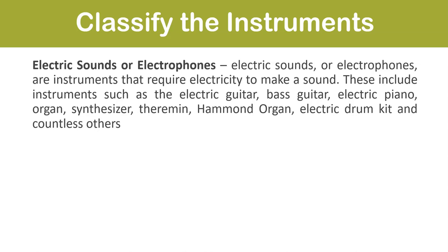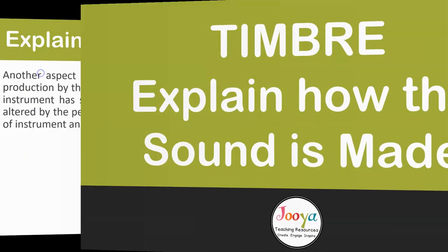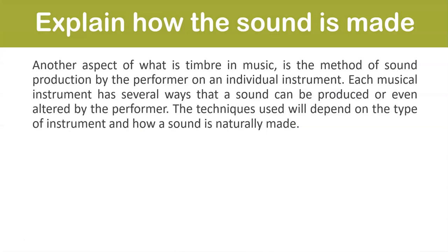Electrophones are instruments that require electricity to make a sound. These include the electric guitar, bass guitar, electric piano, organ, synthesizer, theremin, Hammond organ, electric drum kit, and countless others. Please note that when using this system, voices come under their own classification — soprano, mezzo-soprano, alto, tenor, baritone, or bass — and can be used within each of these systems.